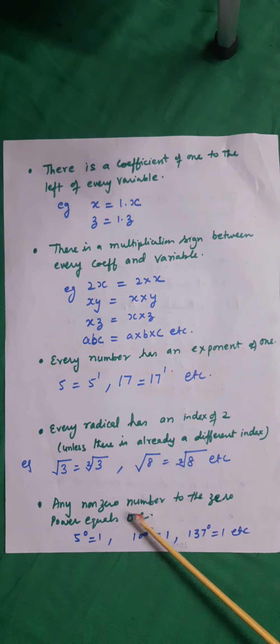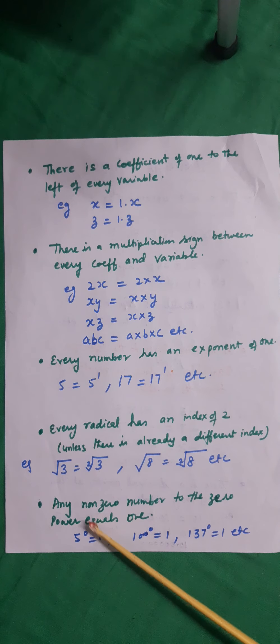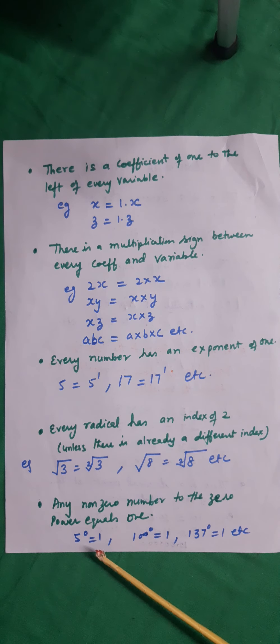Next, any non-zero number to the 0 power equals 1. Number raised to the power 0 is equal to 1. 5 raised to the power 0 is 1, 100 raised to the power 0 is 1, 137 raised to the power 0 is 1, etc.